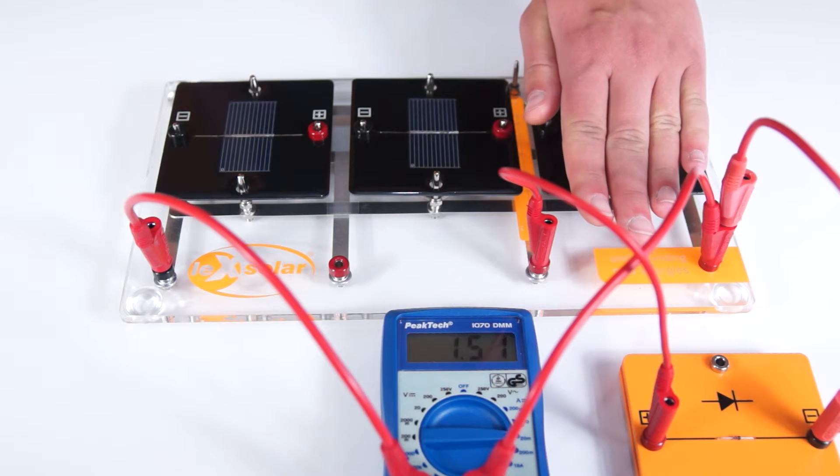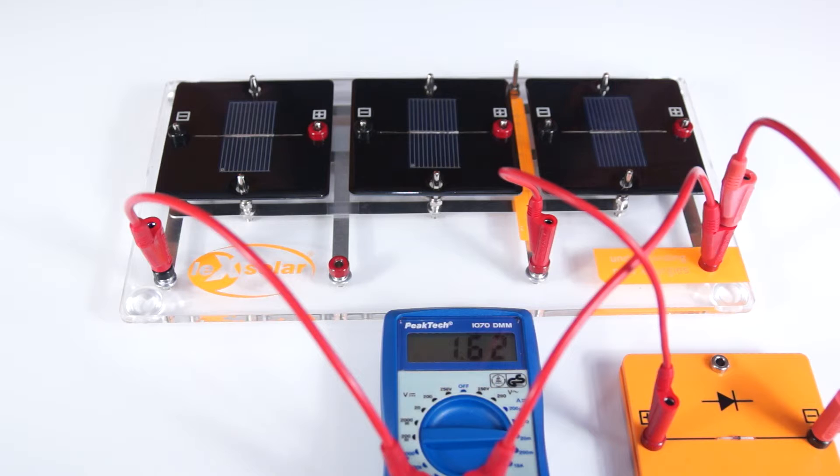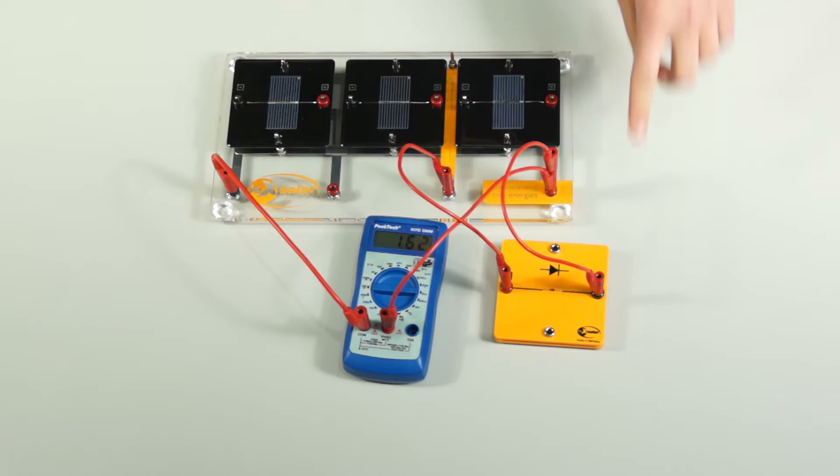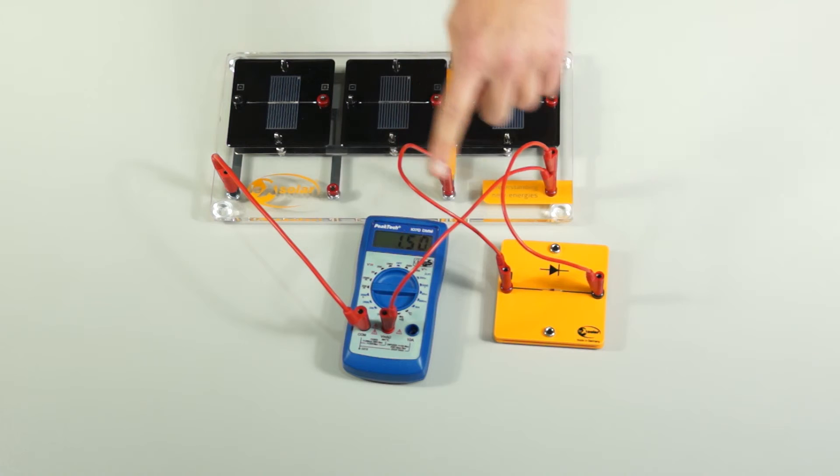This is because the current flow bypasses the darkened solar cell through the diode. In practice, this takes place through so-called bypass diodes. This ensures that for a series circuit of solar cells, the shading of a solar cell does not lead to a complete failure of the system.